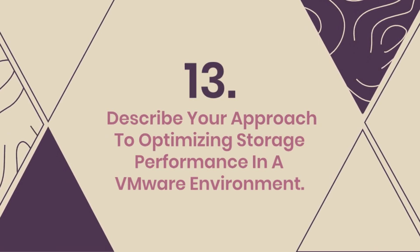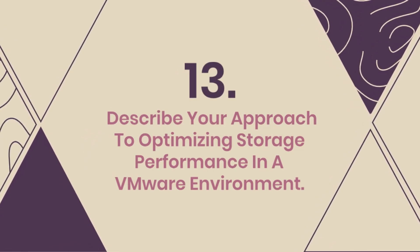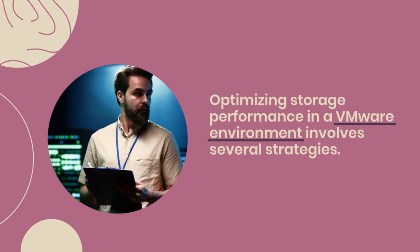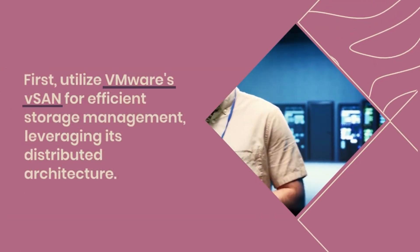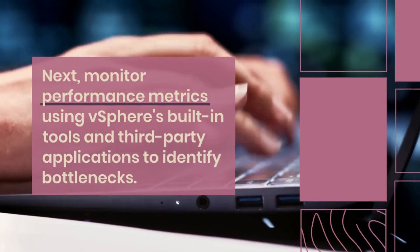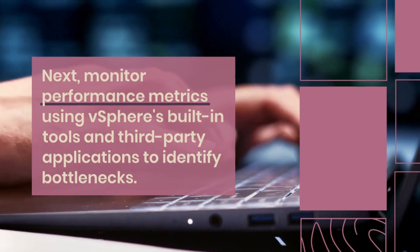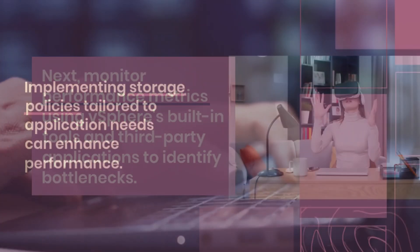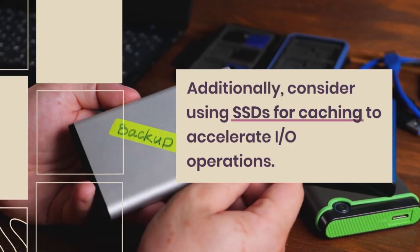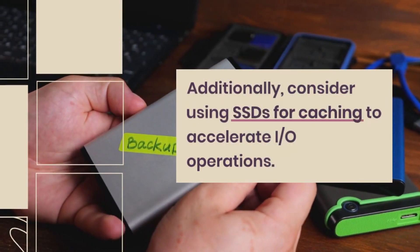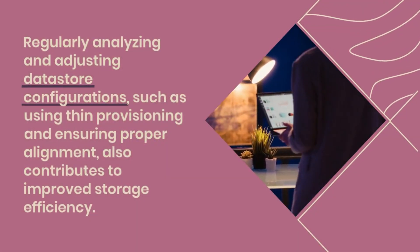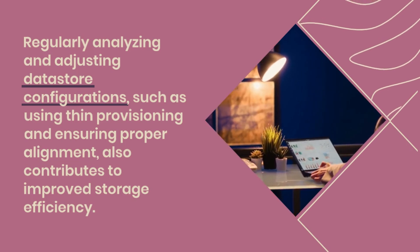Question 13: Describe your approach to optimizing storage performance in a VMware environment. Optimizing storage performance in a VMware environment involves several strategies. First, utilize VMware vSAN for efficient storage management, leveraging its distributed architecture. Next, monitor performance metrics using vSphere's built-in tools and third-party applications to identify bottlenecks. Implementing storage policies tailored to application needs can enhance performance. Additionally, consider using SSDs for caching to accelerate I/O operations. Regularly analyzing and adjusting datastore configurations, such as using thin provisioning and ensuring proper alignment, also contributes to improved storage efficiency.